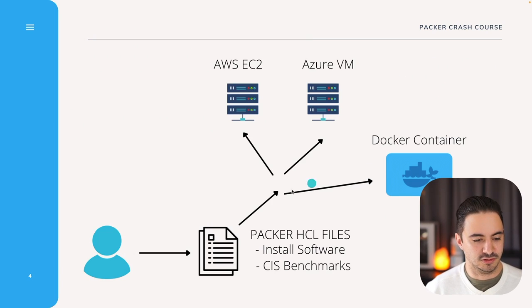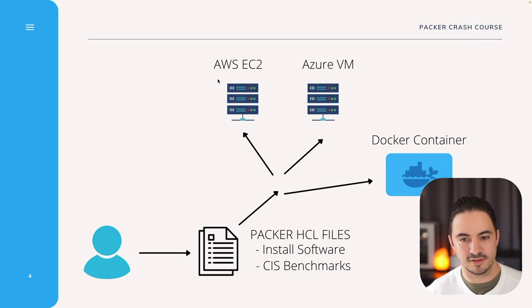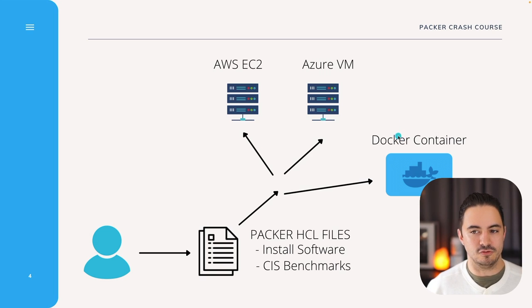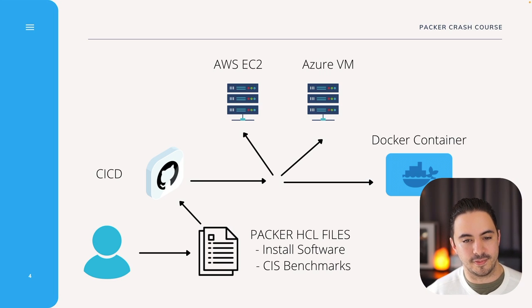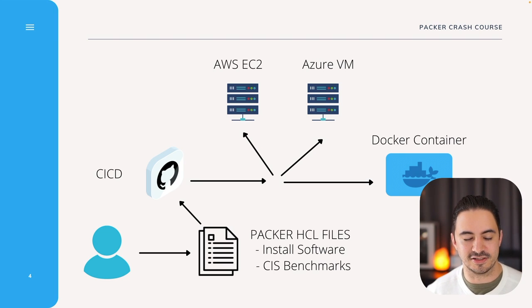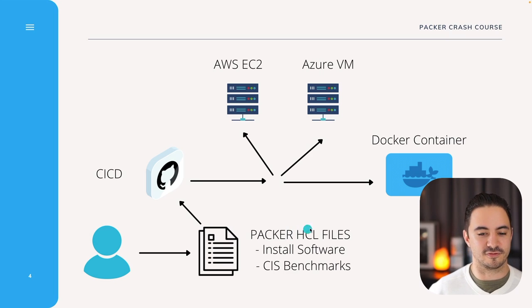As a user, you create Packer HCL files defining your image, then install software or configure security benchmarks, and push this to Amazon EC2, Azure VMs, or even Docker containers. In a CICD workflow, instead of pushing files directly, you hand that off to something like GitHub and use a GitHub Action to automate everything. Packer is very portable and great for CICD practices. That's out of scope for this crash course — you just need the basics before the advanced stuff.